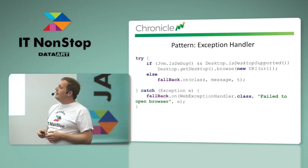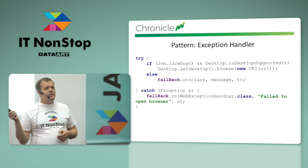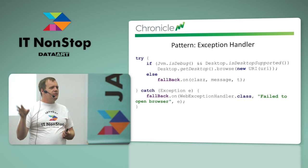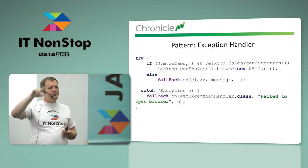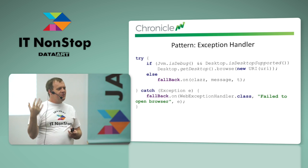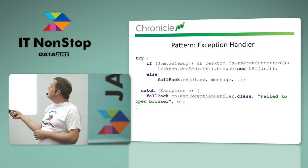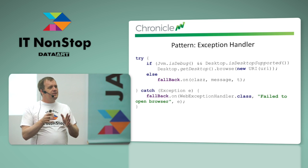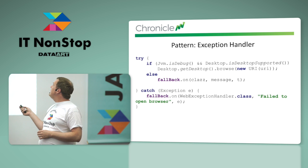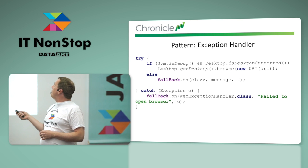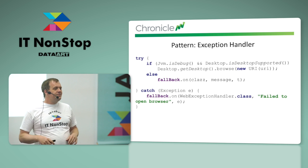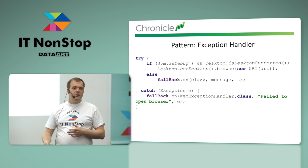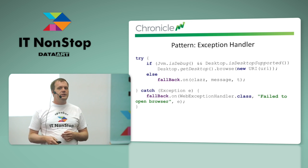Another handler is kind of cute: when an exception is thrown, it opens a window in your browser on Stack Overflow showing what that exception means. It only does this when debugging — we check whether you're running in the debugger, and if you are and there's a desktop, it opens a URL showing what the exception means. Otherwise it falls back to a wrapped exception.